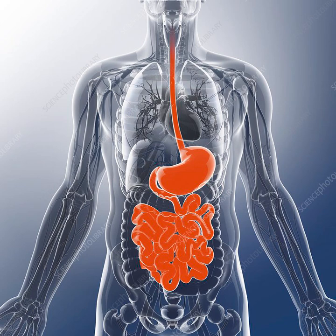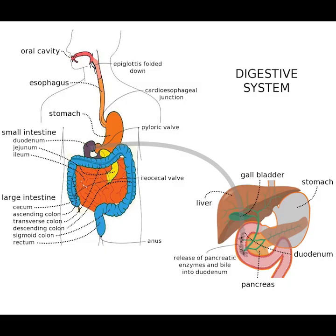This is the anatomy of the digestive system. The human digestive system consists of the gastrointestinal tract, plus the accessory organs of digestion: the tongue, salivary glands, pancreas, liver, and gallbladder. Digestion involves the breakdown of food into smaller and smaller components until they can be absorbed and assimilated into the body.